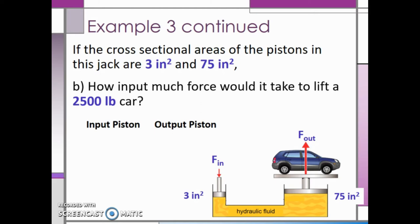Again, force in divided by area in equals force out divided by area out. This time we are solving for the force in, but we know the area in is still 3 square inches. The output force this time is 2500 pounds, since that is the force we want to lift with this jack. The output area is still 75 square inches.